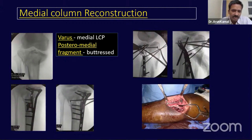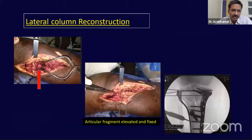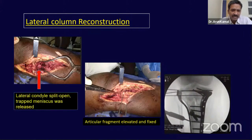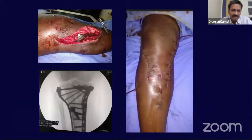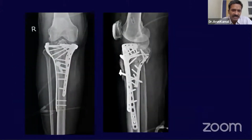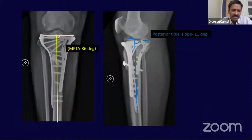Through a medial approach with the patient in supine position, we used the two-plate technique. Moving to the lateral side, we exposed the joint via a submeniscal arthrotomy, visualized the depressed articular fragments, elevated them, temporarily held with K-wires, and used a 3.5 lateral locking plate. The wound was closed, and the immediate postoperative X-ray and nine-month follow-up showed good consolidation.